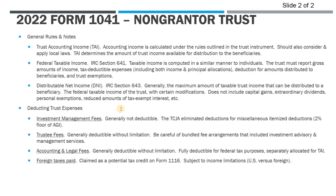Trust accounting income is the accounting income calculated under the rules of the trust instrument. The trust itself can determine how income and expenses are allocated between income and principal, but we also need to be mindful of local laws. In Florida, when we allocate expenses, it's split down the middle — trustee fees and accounting fees are split 50/50 between principal and income. Some states have different allocation percentages under statute, and we'll look at that in the accounting reconciliation.